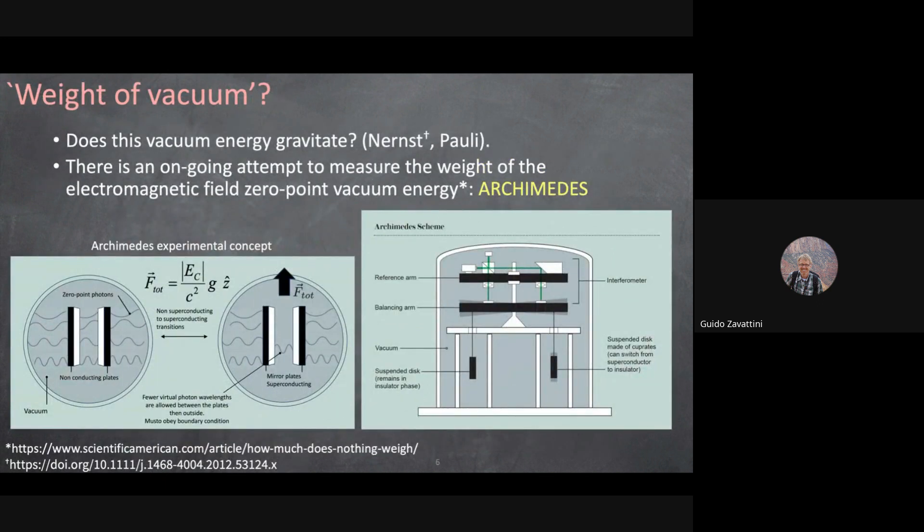Since vacuum fluctuations exist and produce a real physical effect, the next question is: do they have weight? Do they gravitate? This was already posed by Nernst in 1916 — whether the electromagnetic zero-point energy actually has gravitational weight.